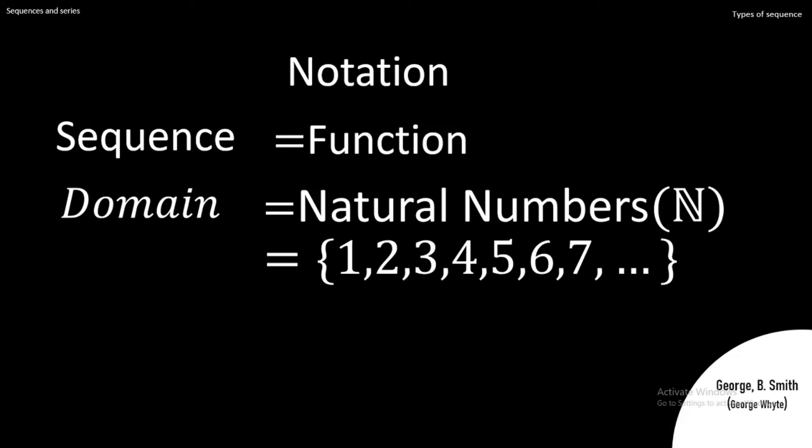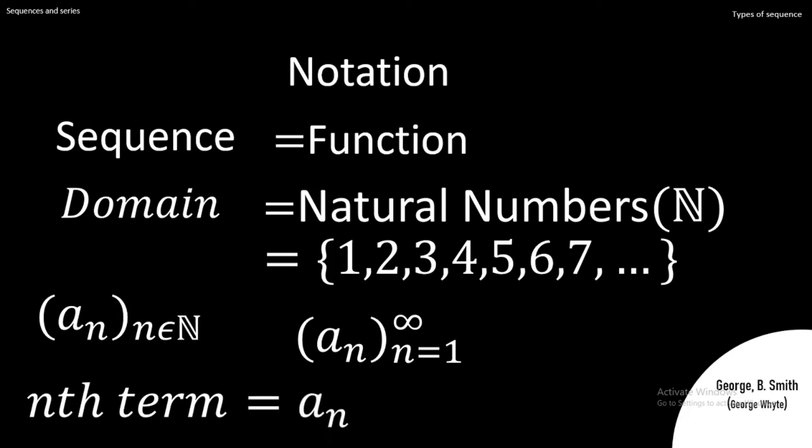We'll come to that later. Now based on that, we have this notation for sequence. The notation we use is aₙ, where n is an element of natural numbers, which means n starts from one. You can also have it as aₙ from n equals 1 to infinity. I don't mind the fact that I'm using 'a'—you can go ahead and use anything you want. The aₙ we have here is what you call the n-th term; that's the general formula you use to present a sequence. It's called the n-th term.